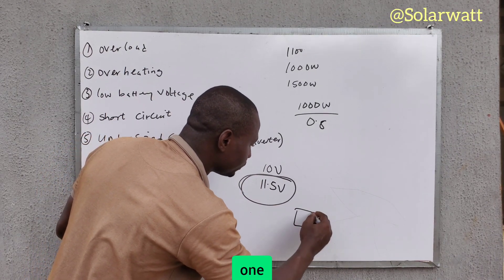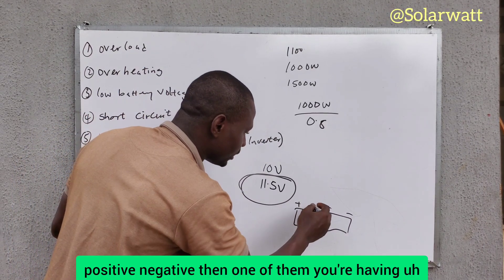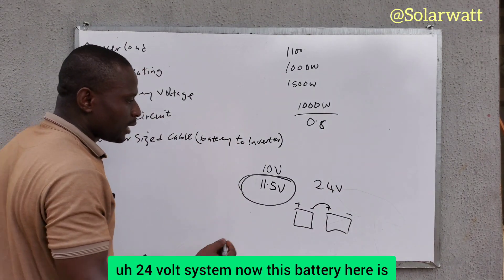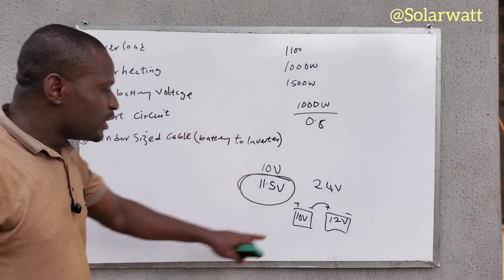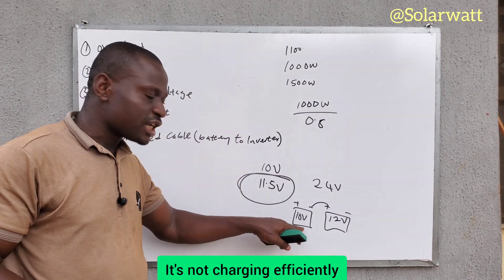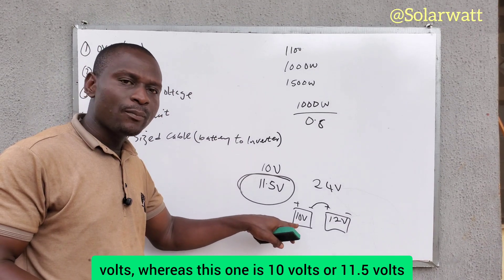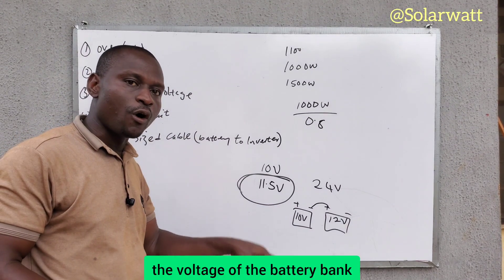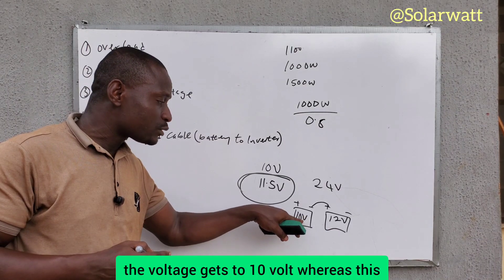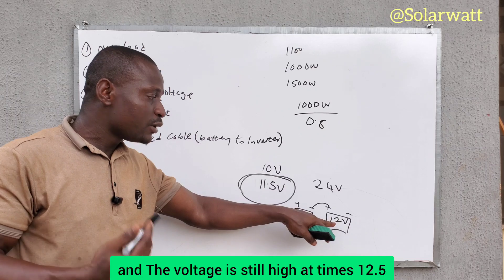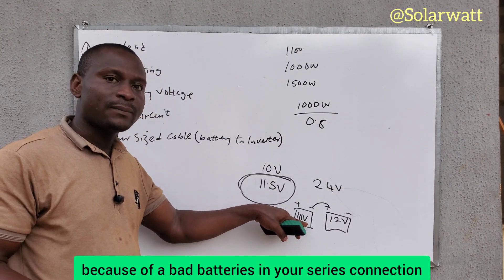For example, in a 24-volt system with two batteries in series, if one battery reads 12 volts while the other reads only 10 volts, the low battery is bad or undercharged and not charging efficiently. One battery may be at 12.7 volts while the other is at 10 or 11.5 volts. That bad battery will drag down the voltage of the entire battery bank, so the inverter senses the low voltage of the bad battery. Once its voltage drops to 10 volts, the inverter will shut down even though the good battery's voltage is still high.